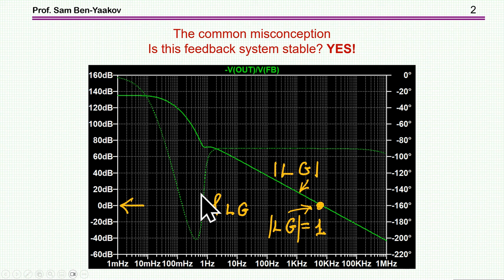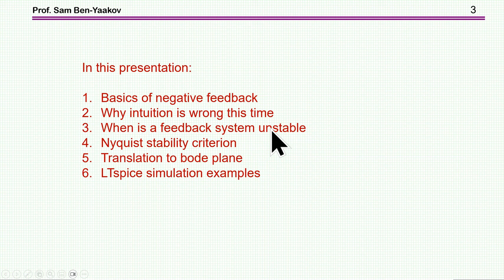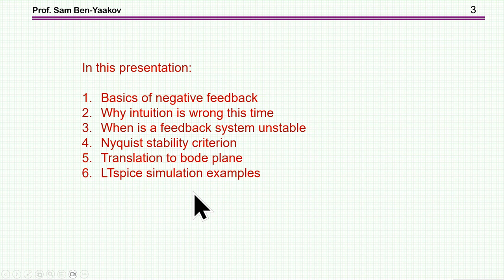Many will say that this is an unstable system. Well, as it turns out, this system is stable. So the objective of this presentation is first to talk about the basics of negative feedback, then to discuss why intuition is wrong in this case, then discuss when a feedback system is unstable, talk about the Nyquist stability criterion, and then translate this stability criterion into the Bode plane, and wrap up with examples of stable and unstable systems.